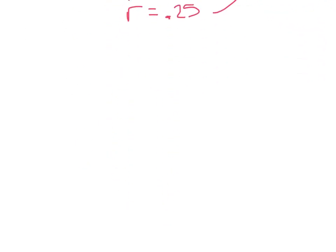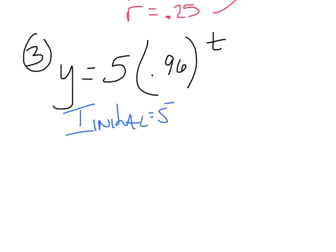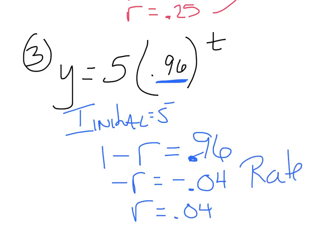Example 3 — try it on your own: y equals 5 times 0.96 to the t. The initial amount is 5. Since 0.96 is less than one, it's decay. Setting one minus r equals 0.96, solving gives negative r equals negative 0.04, so r equals 0.04 — a 4% decrease. That does it for exponential growth and decay. We look forward to practice tomorrow — have a great night.